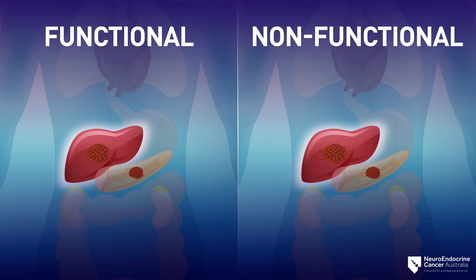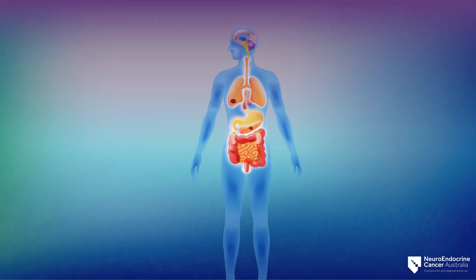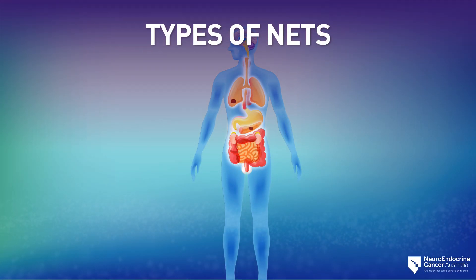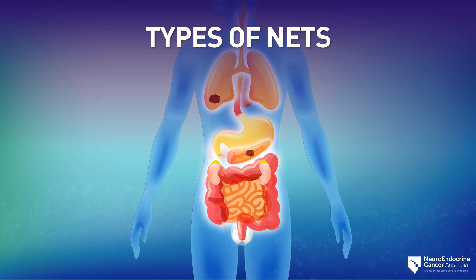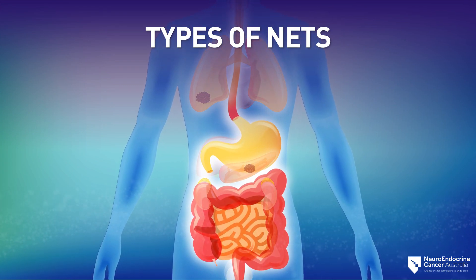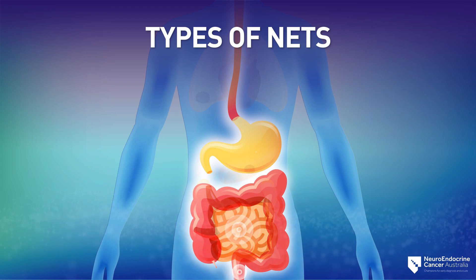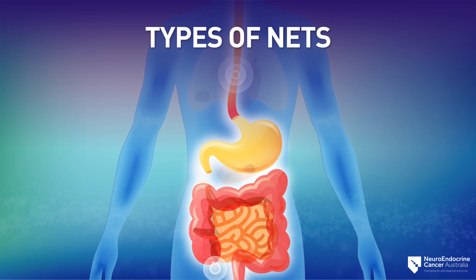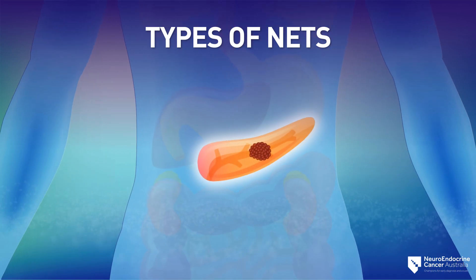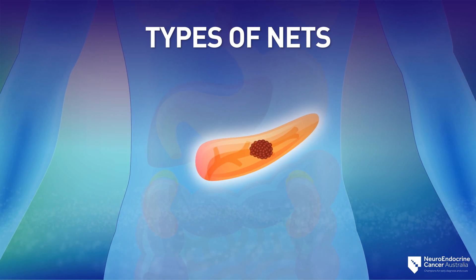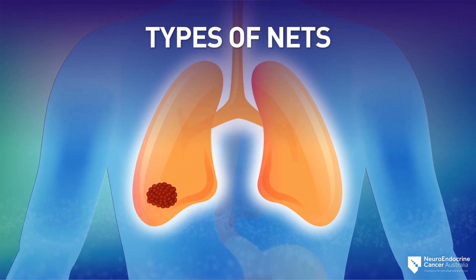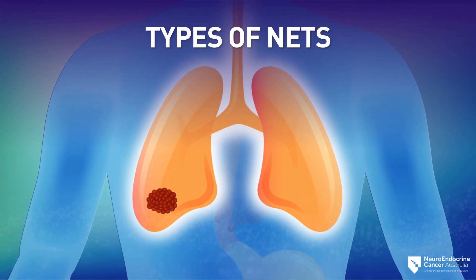NETs are grouped by where the tumours started in the body. The most common types of NETs are GI NETs (gastrointestinal), including the small intestine, rectum, stomach, colon, esophagus, and appendix; P-NETs, pancreatic NETs; and L-NETs, lung NETs.